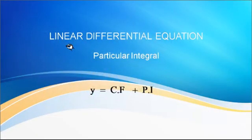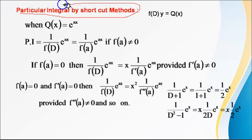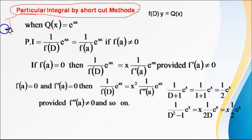Hi friends, in this lecture we will study about how to find out the general solution of a linear differential equation. We will study how to find the PI by using shortcut methods. Already we studied the general method. In case of shortcut methods, the first method is if Q of x equals e raised to ax (exponential function), then how to find out the PI.